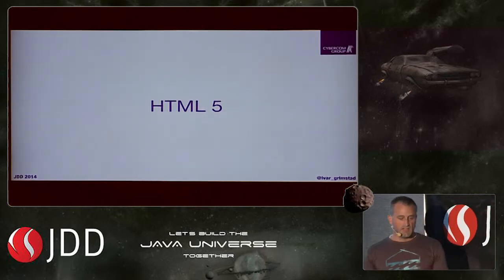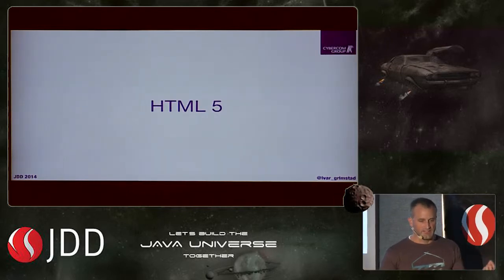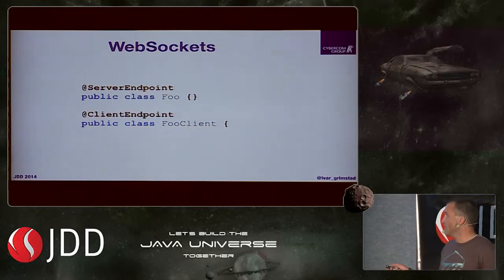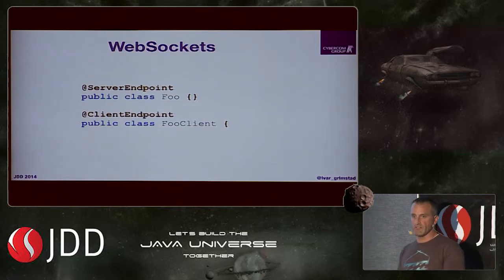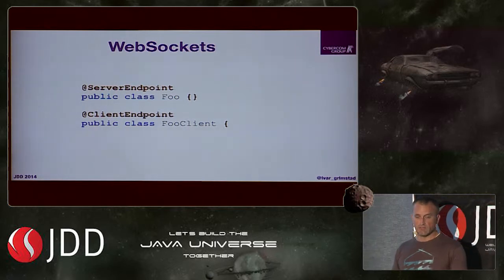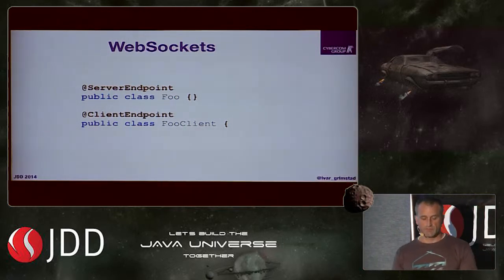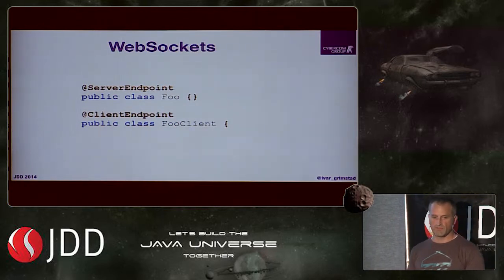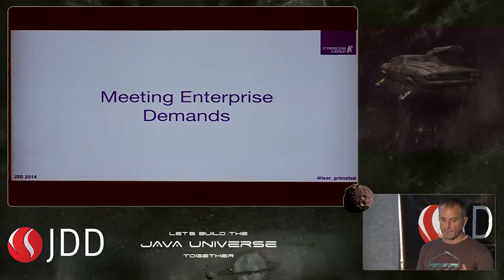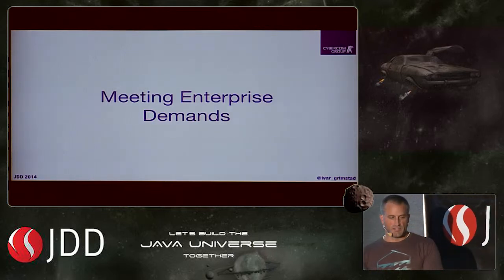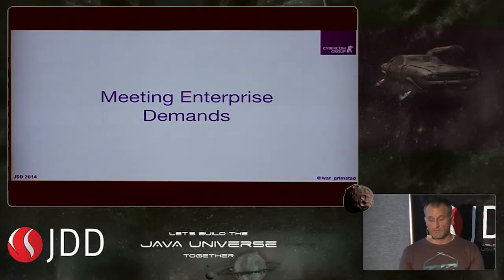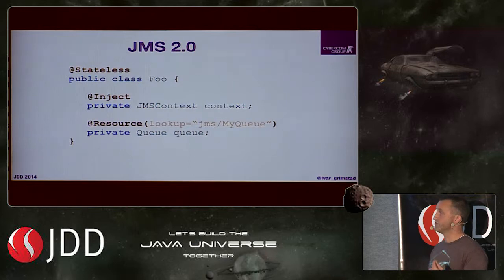For HTML5, the server-side features are WebSockets and JSON processing. WebSockets are implemented with a @ServerEndpoint annotation and methods like onMessage, onOpen, onClose. On the client side, you annotate with @ClientEndpoint — it's similar to JAX-RS. For meeting enterprise demands, they added batch processing to Java EE, and there's an update to JMS 2.0, making it much easier to send a simple message to a queue compared to the old cluttered JMS code.